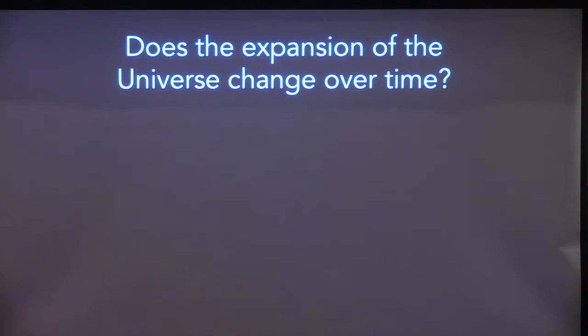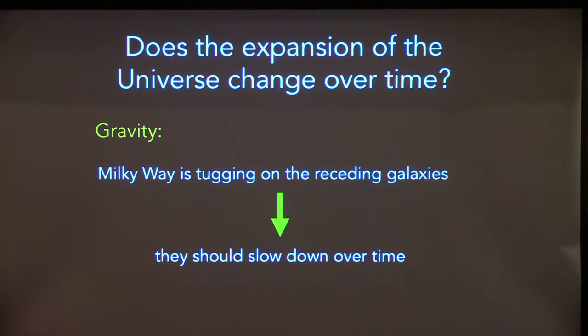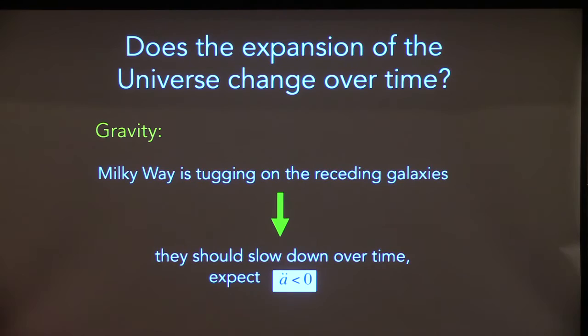A natural first question is: the universe is expanding — is that expansion changing over time? We know that on the largest scales gravity is the dominant interaction, and gravity is attractive. All these galaxies are receding from the Milky Way, but gravity is tugging on them as they move away. So we would expect that if we could observe any of these galaxies tomorrow, they would be moving away from us with a slightly lower speed than today — we expect them to be slowing down. That means we expect the second time derivative of the scale factor to be negative; we expect the universe to be decelerating.